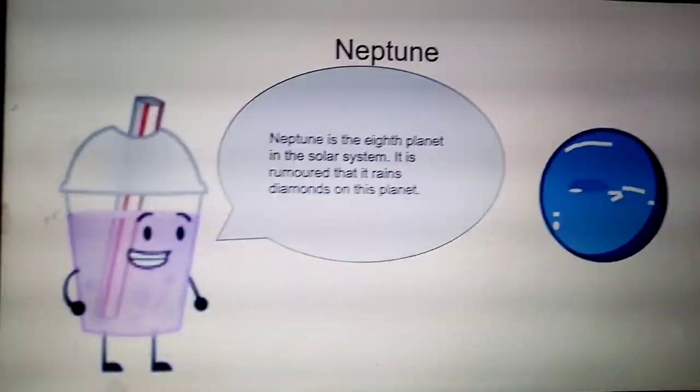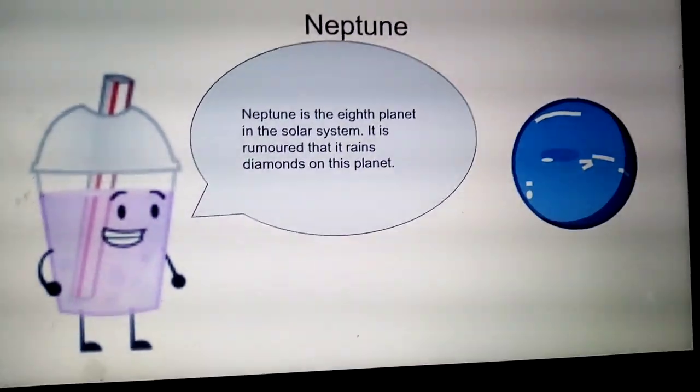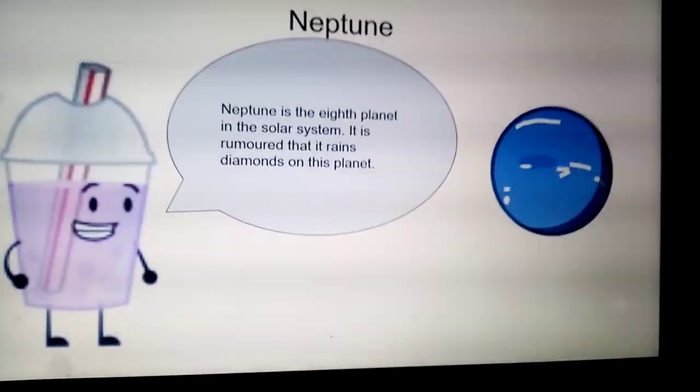Neptune is the eighth planet in the solar system. It is rumored that it rains diamonds on this planet.